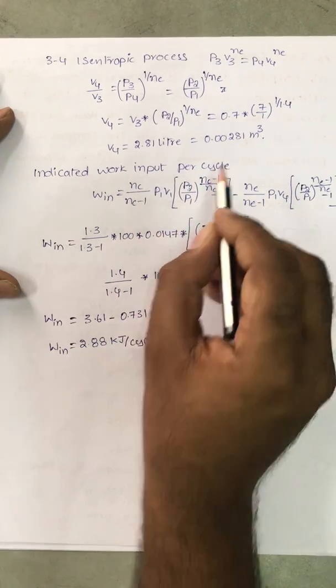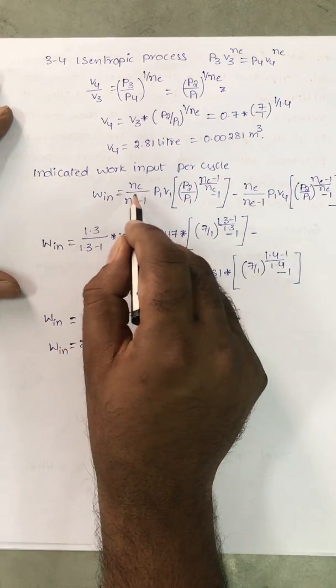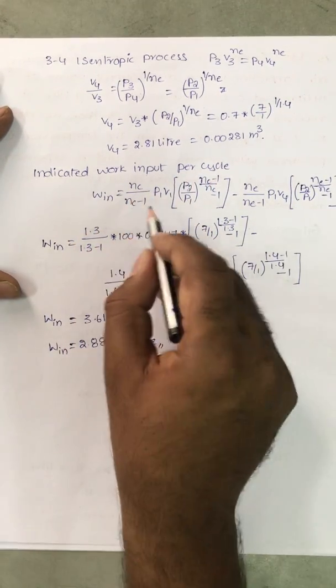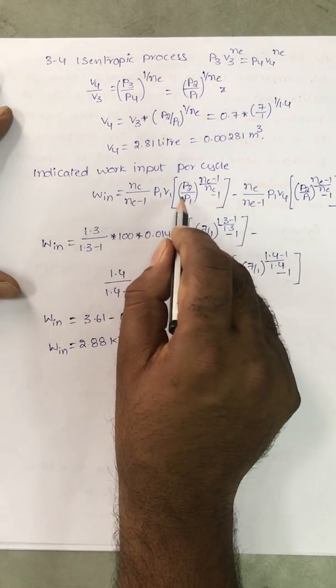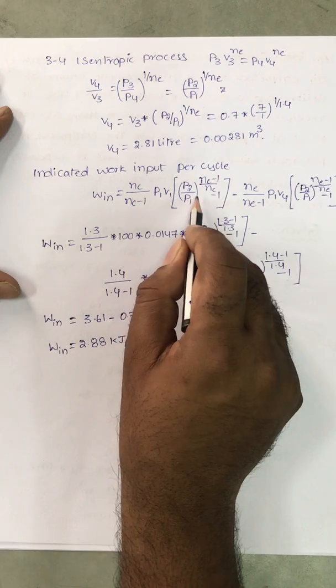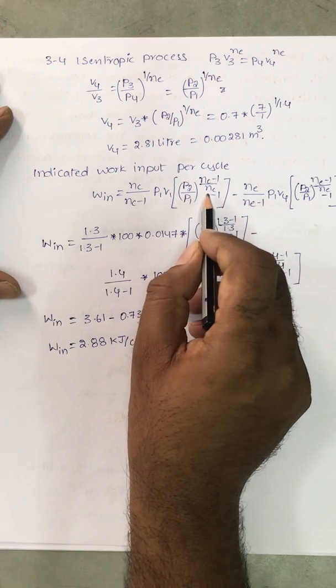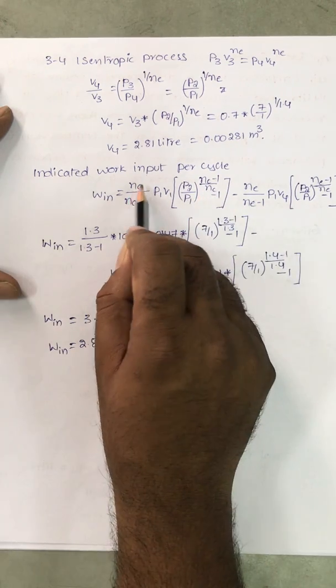Indicated work input per cycle: W indicated is compression work minus expansion work. The formula is N by N minus 1 P1 V1 into P2 by P1 all power N minus 1 by N minus 1. If it is compression, use compression index.